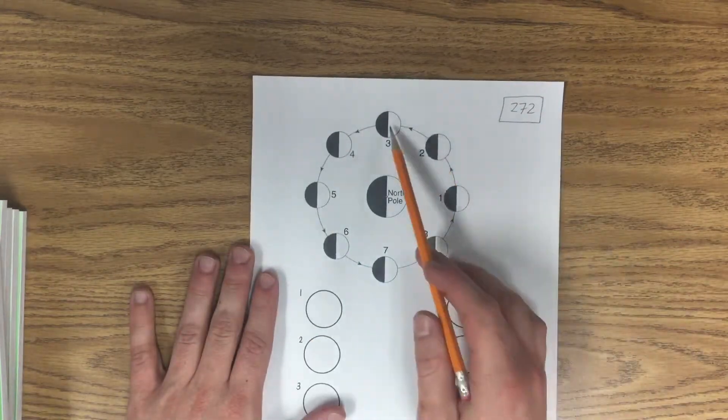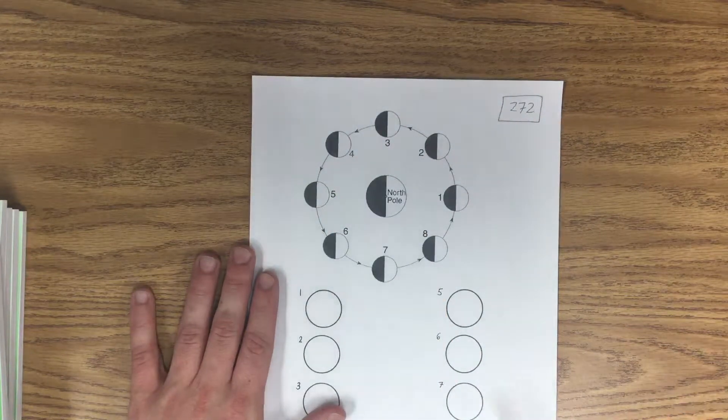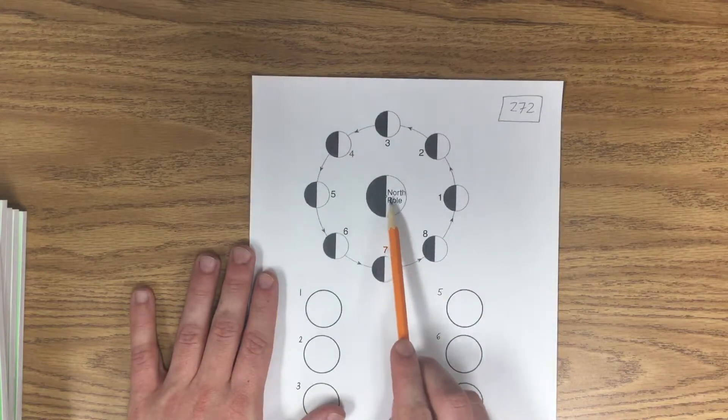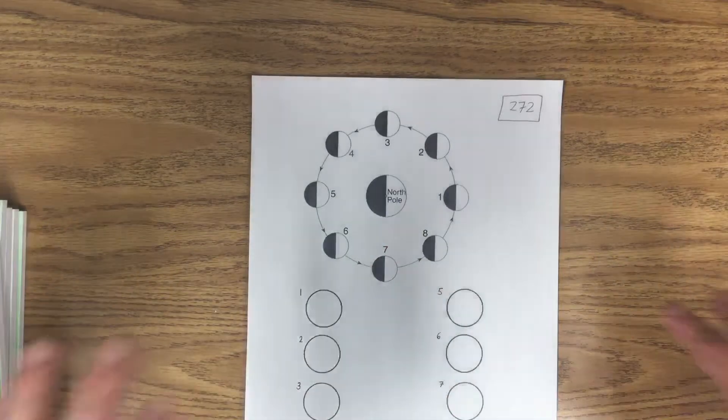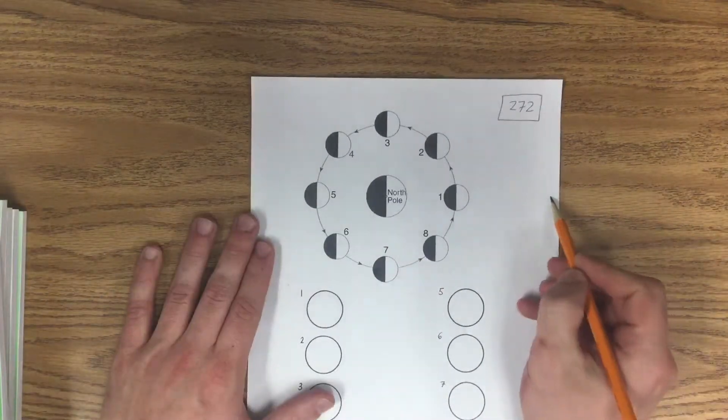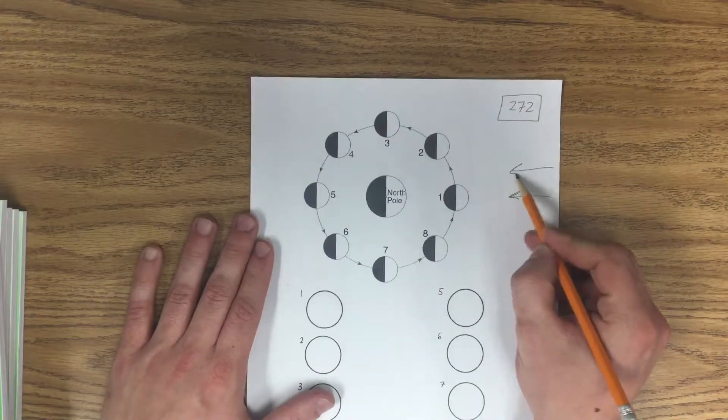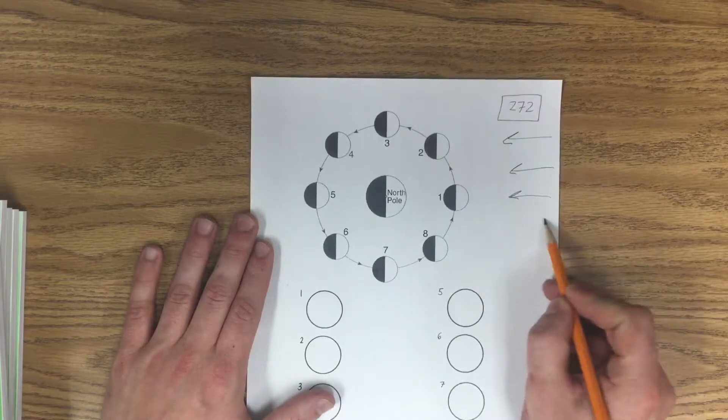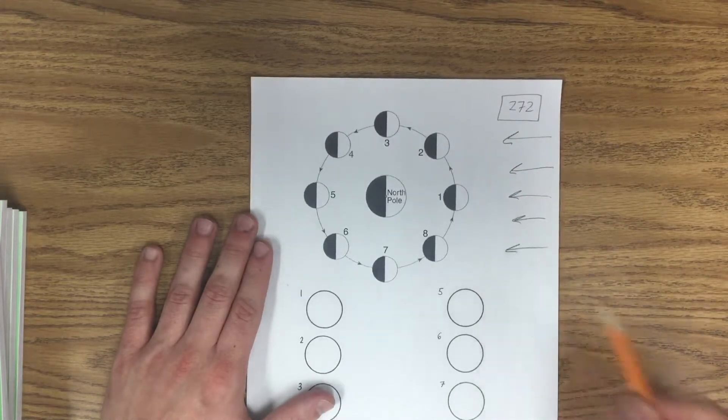These are just showing you different places where the moon could be located. This object right here is the earth and the top is the North Pole so we're looking down on it. I'm gonna draw in lines representing the sun's light just to show that this is the way it's going, which is why the right side on all these images are lit.